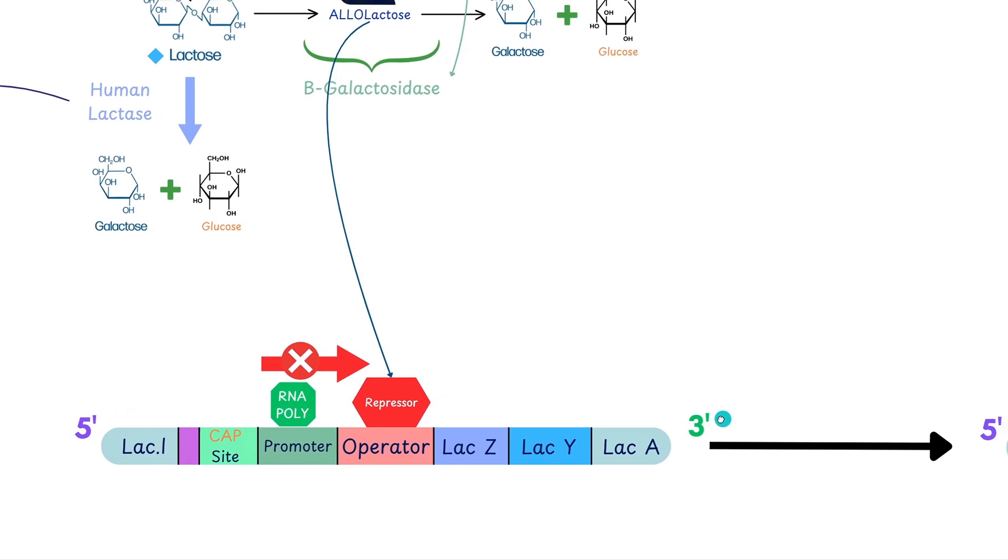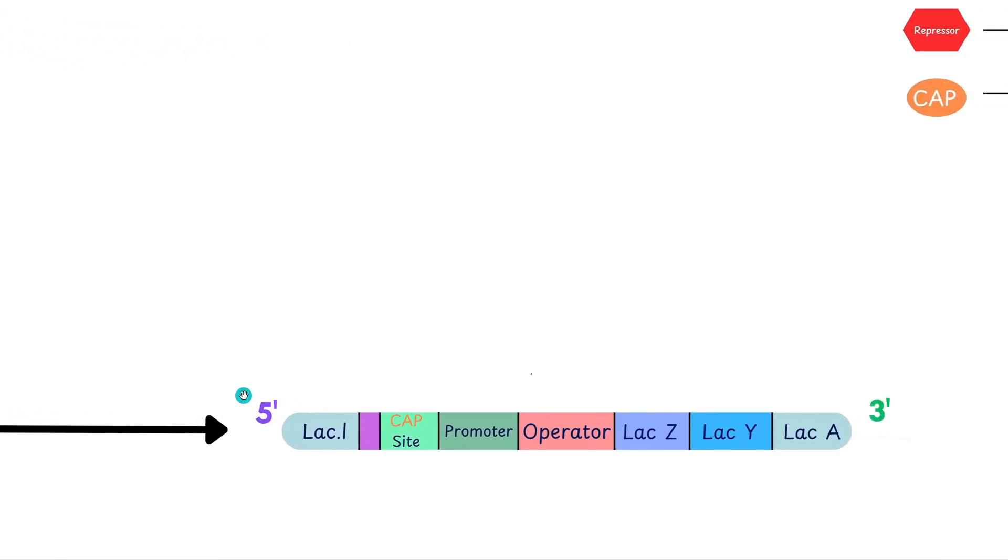The allolactose acts as an inducer basically by binding the repressor protein and causing a conformational change that releases the repressor from the operator. So just in this base case scenario, when we have the RNA polymerase, it's unable to transcribe because the repressor acts as a roadblock. However, because the allolactose now binds the repressor, the repressor goes through a conformational change in its DNA binding region and it basically unbinds from it, allowing RNA polymerase to continue on and transcribe the lacZ, lacY, and lacA structural genes.